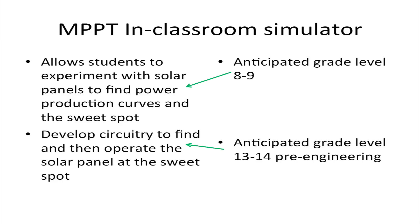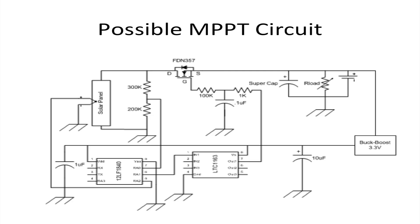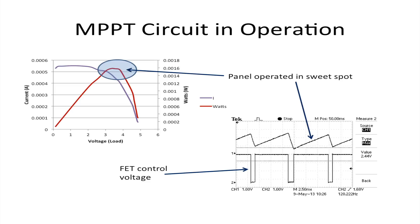At the community college engineering level, students can develop circuitry in their classrooms to implement MPPT — Maximum Power Point Tracking. The basic circuit I developed took only a couple of hours to design, assemble, program the PIC, and make work. The oscilloscope pattern shows the circuitry switching the solar panel on and off very quickly to keep it operating in the sweet spot.